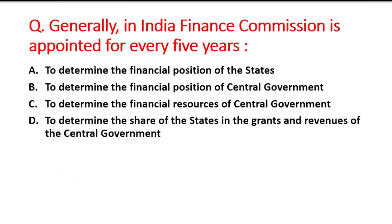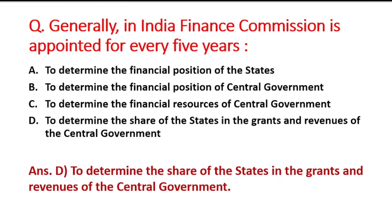Next question: Generally in India, the Finance Commission is appointed every 5 years. Option A is to determine the financial position of the states, B is to determine the financial position of the central government, C is to determine the financial resources of the central government, and D is to determine the share of the states in the grants and revenues of the central government. The right answer is option D.